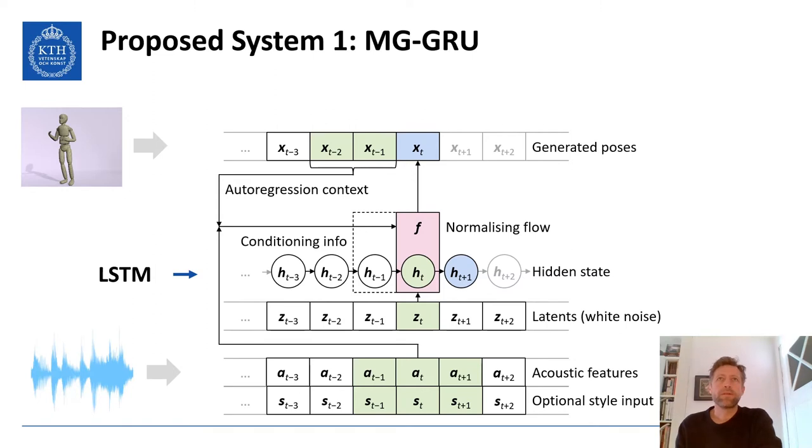In addition to our base Style Gestures implementation, I prepared two systems for comparison and possible improvements. In the first system, I replaced the LSTM in the affine coupling layer with a gated recurrent unit network. This was done to see if comparable results could be obtained with a shorter training time and fewer parameters.